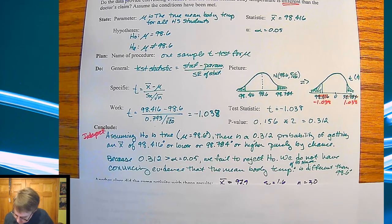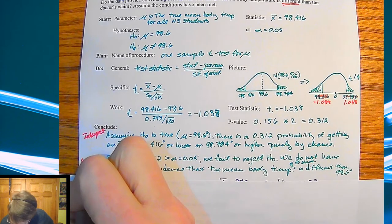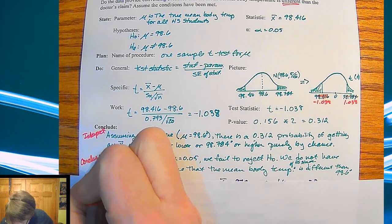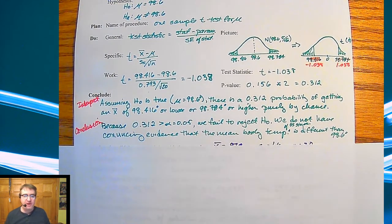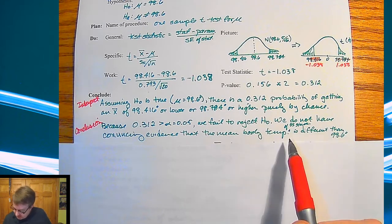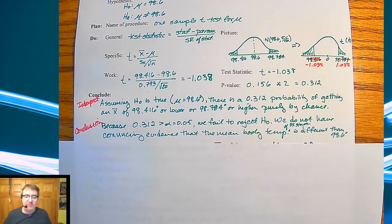So now for the conclusion: because 0.312 is bigger than my alpha value of 0.05, we failed to reject the null hypothesis. We do not have convincing evidence that the mean body temperature of high school students is different than 98.6. Now the neat thing which stats medics does here, and those are the guys I forgot to mention above, those are the people who put a lot of this together that I'm slightly modifying.